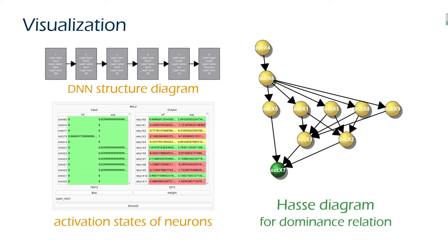PRODeep illustrates the dominance relationship between output neurons using the Hasse diagram. For example, the given Hasse diagram indicates that the 7th output neuron has the largest value at all times, and the 3rd output neuron is always less than the 7th output neuron.